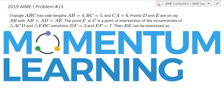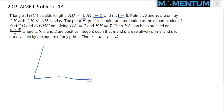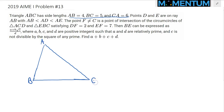This is 2019 AMC Problem 13. We start with a triangle ABC with side lengths 4, 5, and 6.